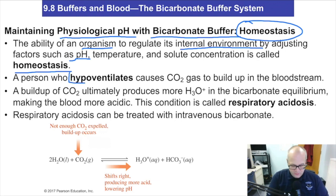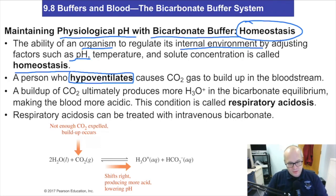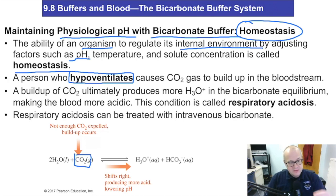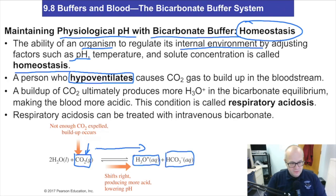If you hypoventilate — which means breathe at a slower rate per minute than normal — what will happen is you're not breathing out CO₂ as fast as you should be, so CO₂ is being forced to accumulate in your blood. We already know that if this concentration of CO₂ goes up, Le Chatelier's principle says the equilibrium should shift to the right. If you don't understand Le Chatelier's principle, go back and review it — you must understand it. This concentration goes up, equilibrium is forced to go to the right, and you will build up the concentration of hydronium and bicarbonate.